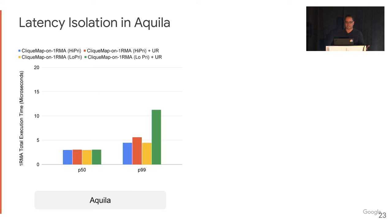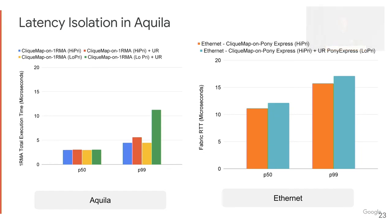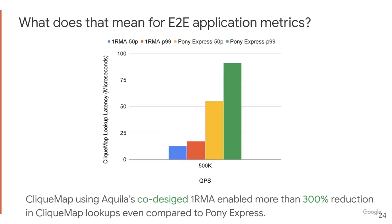We also ran an experiment where they share the virtual channel, and we do see some effect on tail latency from the bulk traffic. Comparing to Ethernet: we run the same experiment with ClickMap on a higher-priority QoS class and bulk traffic on a lower priority — QoS does achieve the required isolation, but overall the latency is higher than what's achieved in Aquila. For application-level results, we measured end-to-end lookup latency for ClickMap. ClickMap on Pony Express achieves much higher latency than on 1RMA, which is co-designed with Aquila — more than a 300% latency reduction.